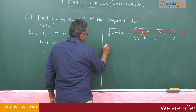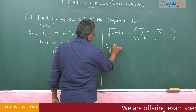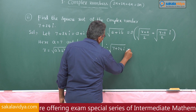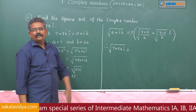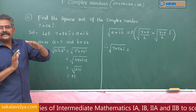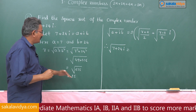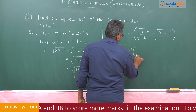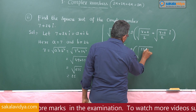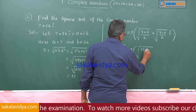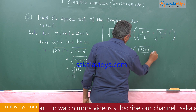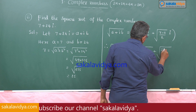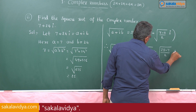Therefore, the square root of 7 plus 24i equals: substituting r equals 25 and a equals 7, we get root of (25 plus 7)/2 plus i times root of (25 minus 7)/2.